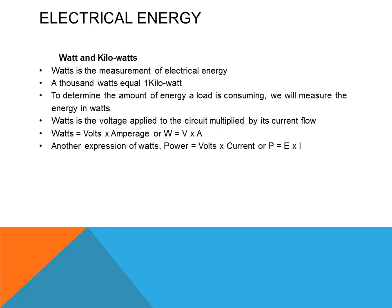Kilowatts or watts is the measurement of energy — basically the relationship between voltage and current flow, the force and movement of electrons. Watts is the measurement of electrical energy. A thousand watts equals one kilowatt. To determine the amount of energy a load is consuming, we measure energy in watts. Watts equals voltage times amperage. Power is watts, so power equals voltage times current, or P equals E times I.